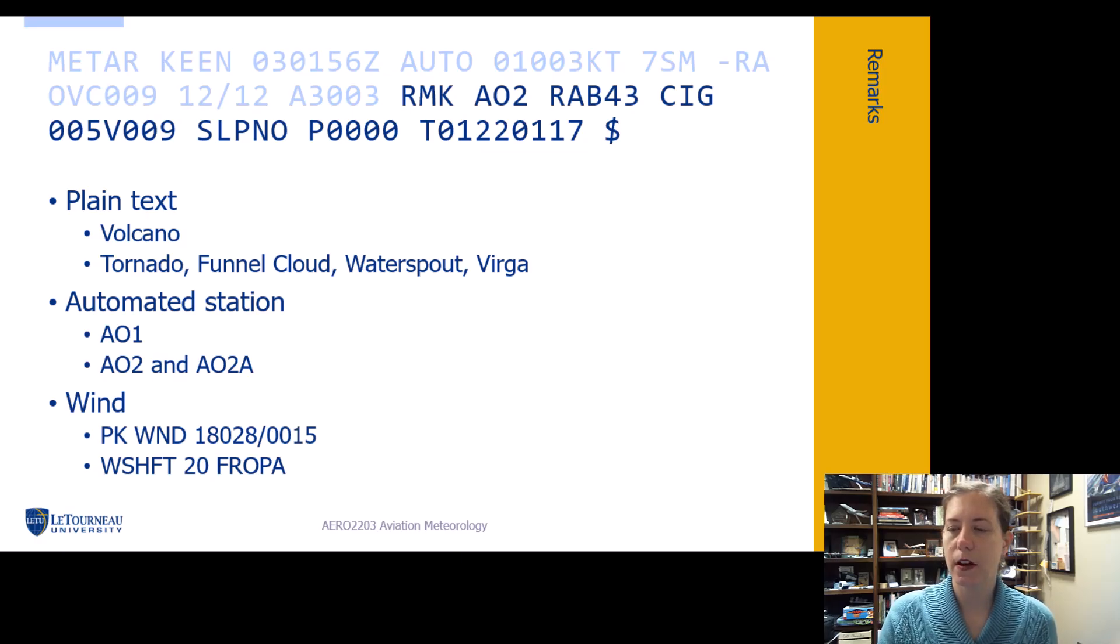Automated stations, you see this often and people are like I don't know what that means. Well, let's talk about what that means. AO1 does not have the precipitation discriminator, so the machine is incapable to tell you if it is raining or snowing. It can tell you that it's precipitating, but it's not going to tell you if it's rain or snow. AO2 does have a precipitation discriminator system, so it can tell you if it's rain or snow. AO2A means that it is augmented by a human. So that little A on the end, augmented by a human. You need to know the difference between AO1, AO2, AO2A. That's important to know.